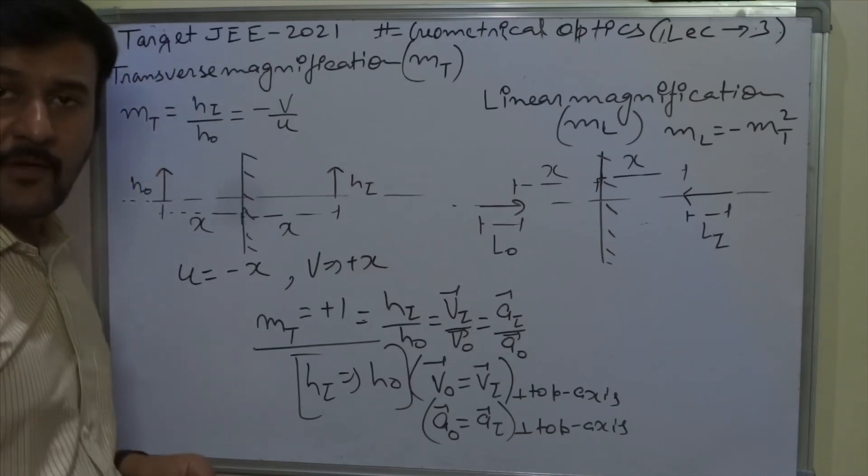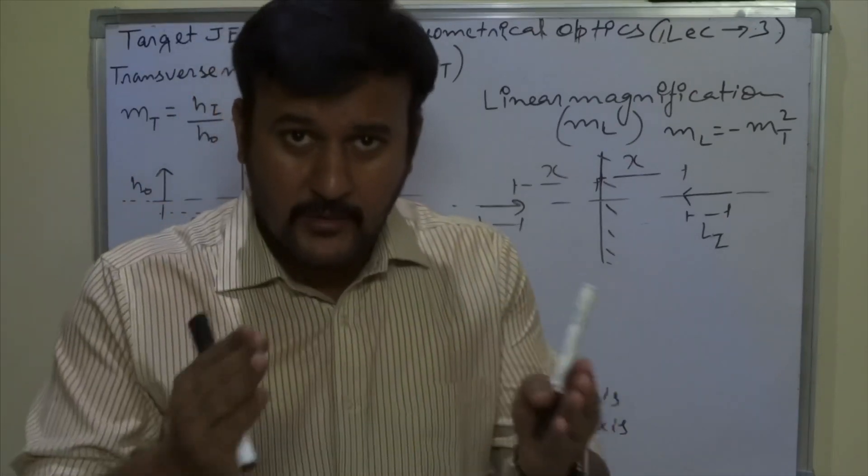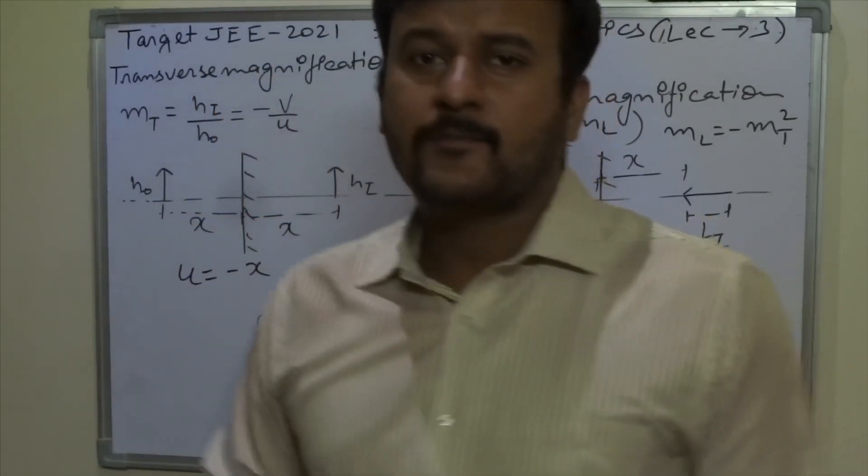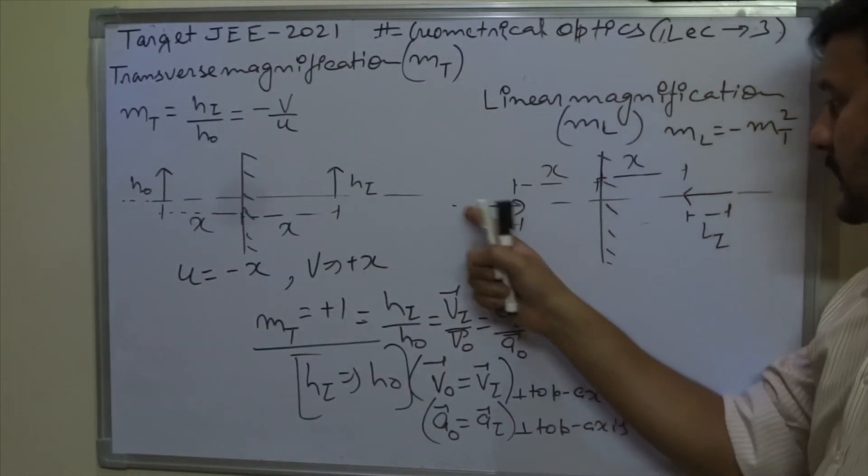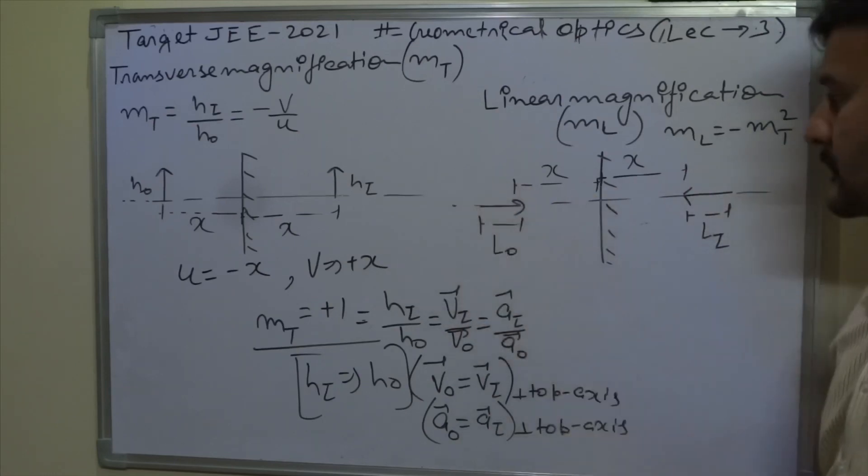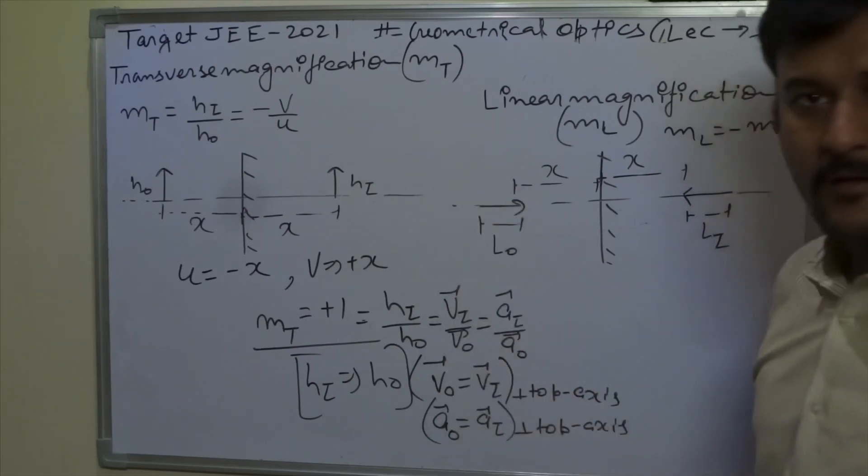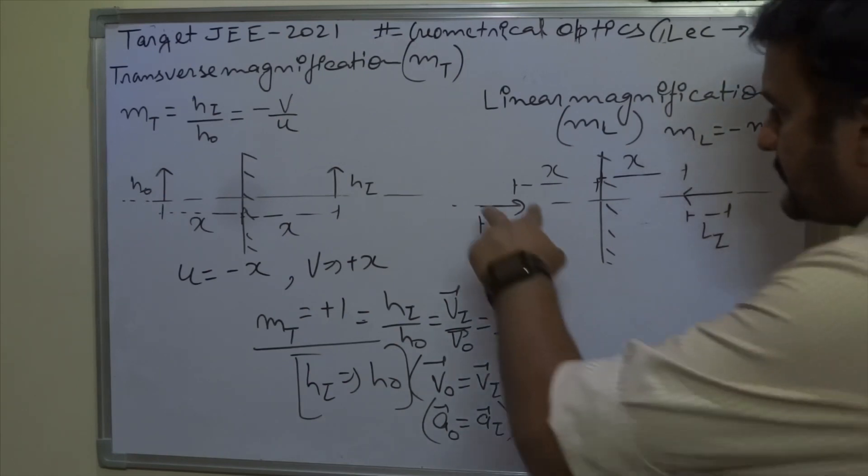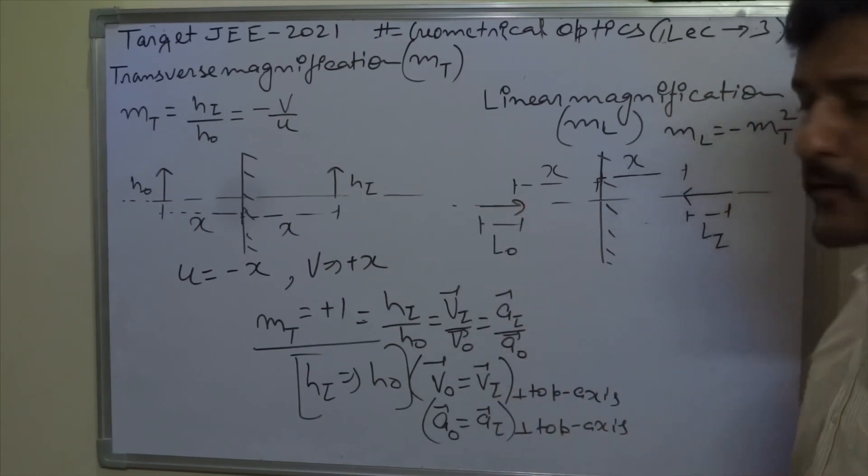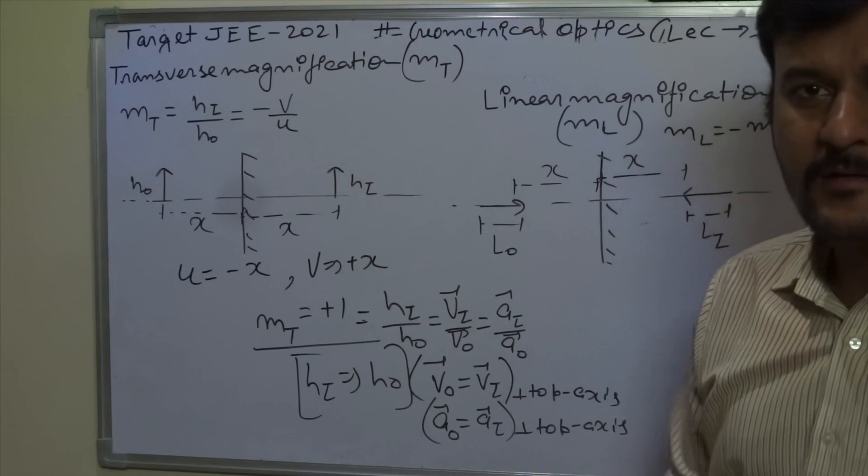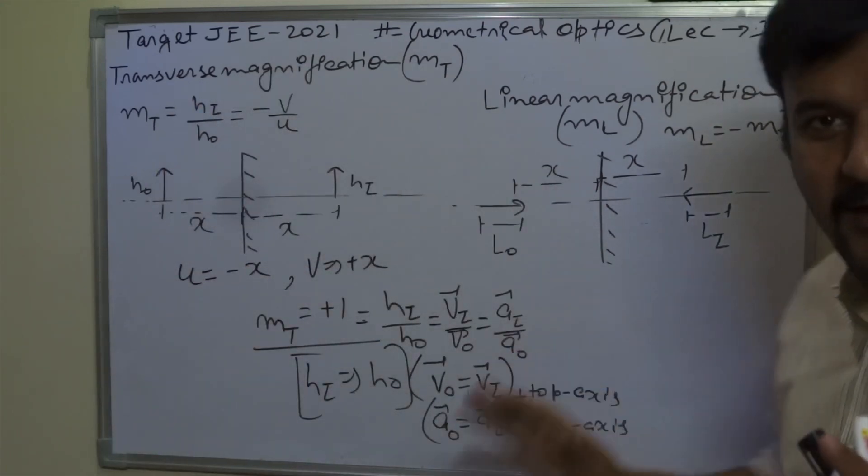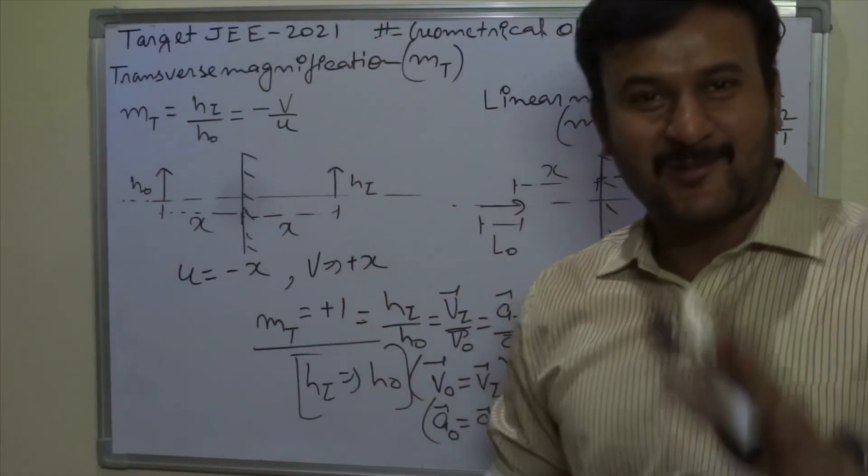Now we have linear magnification. Linear means along the line. So which is the line? The most important line is the principle axis. So in linear magnification, this is the principle axis. Now the problem is that the object is not perpendicular to principle axis. In fact, the object is laid parallel to the principle axis. So the image is parallel to the principle axis. This is clear. Now, this is the opposite direction.